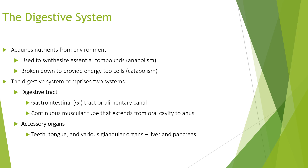The digestive tract involves a gastrointestinal tract or alimentary canal — a continuous muscular tube that extends from the oral cavity to the anus. The accessory organs include the teeth, tongue, and various glandular organs such as the liver and the pancreas.